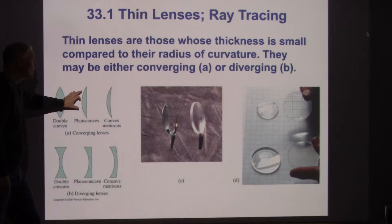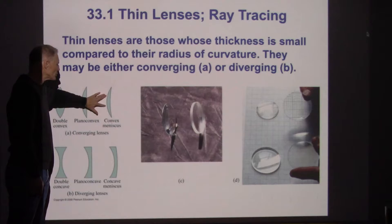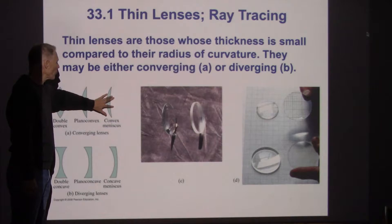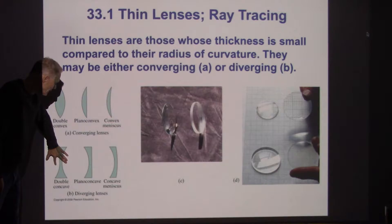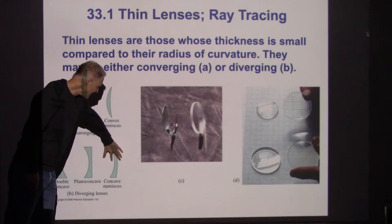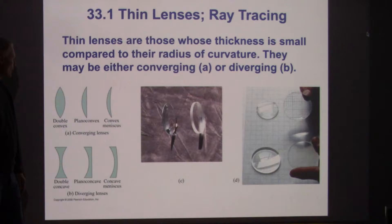The glass could have one flat surface, or one surface could be convex and one concave, where the front curvature is tighter than the back. That means the front surface dominates and gives converging refraction. All three of those shapes will be converging. Similarly, double concave, concave-planar, or concave where the center is thinner — all those will be diverging.